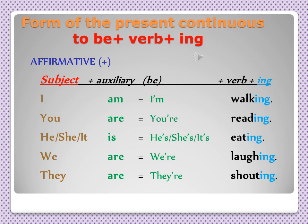Now we are moving to the form. I prefer to present the form after the uses. The affirmative case: the form of the present continuous is 'to be + verb + ing'. The verb 'to be' is conjugated as: I am, you are, he is, she is, it is, we are, they are.